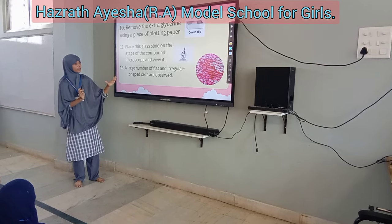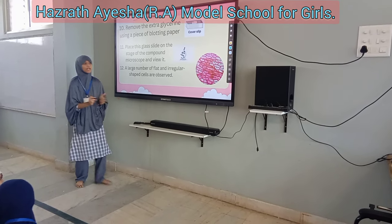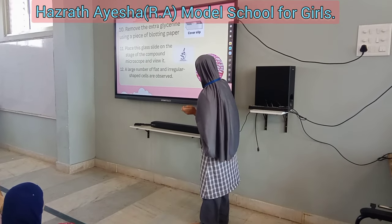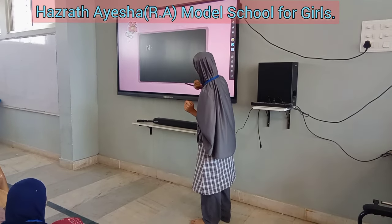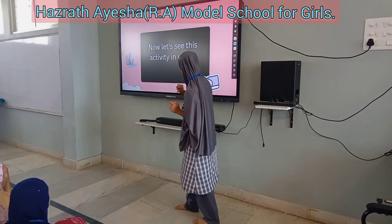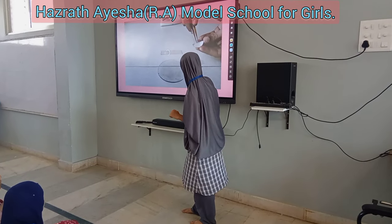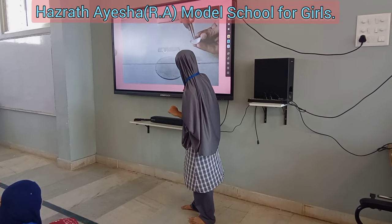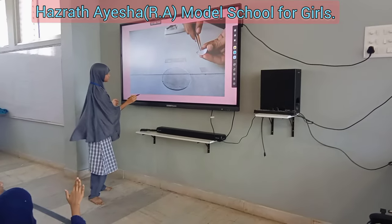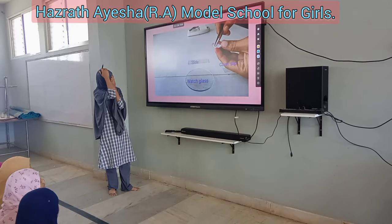A large number of flat and irregular-shaped cells are observed. This is the cell wall, this is the cytoplasm, and these are the structures we can see under the microscope.